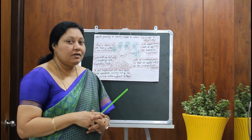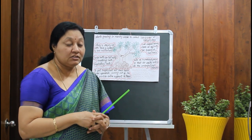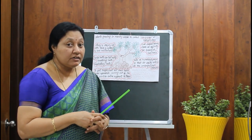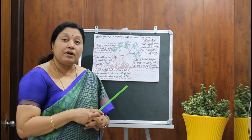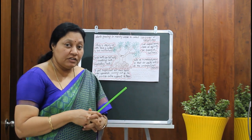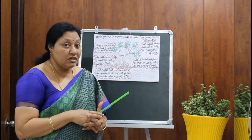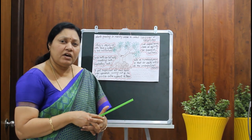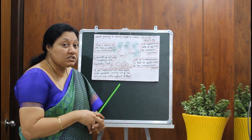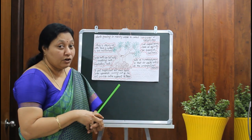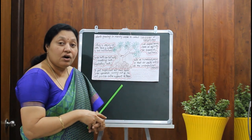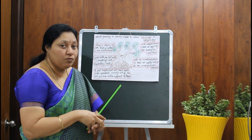Now we are going to learn adaptations in plants that grow in marshy areas. The wetlands that are covered with water for a long period of time are called marshy areas. Due to that reason, the soil here is very sticky and clayey with very little oxygen and very less nutrients. The trees that grow in marshy areas are called as mangroves or halophytes.